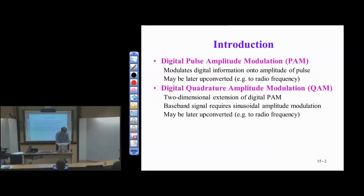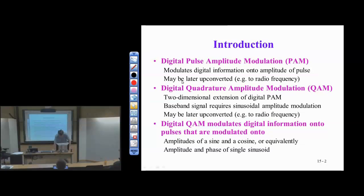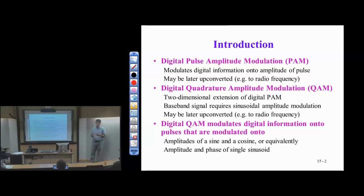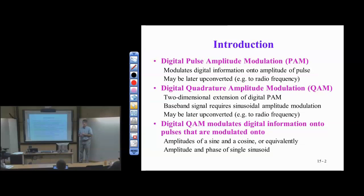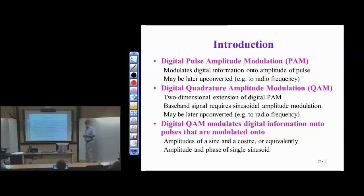We've already talked about PAM and how we can take two PAM signals without conversion and put them in the same transmission bandwidth as one signal. This now becomes quadrature amplitude modulation. We can think of this transmission as either being done by subtracting two upconverted PAM signals, or by analysis, as placing information in both the amplitude and phase of a single sinusoid.